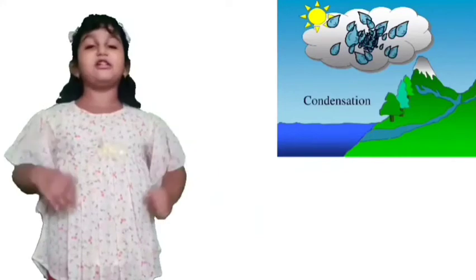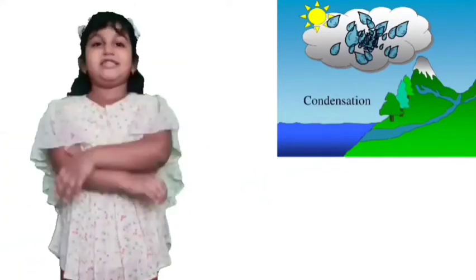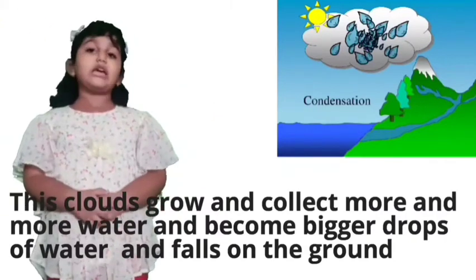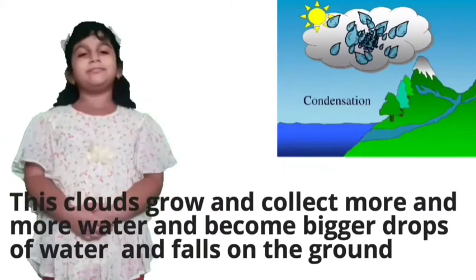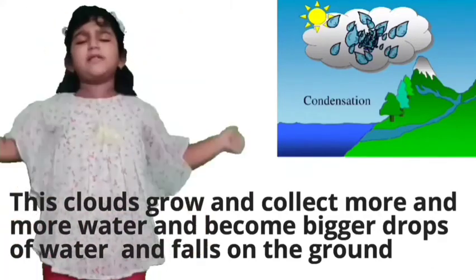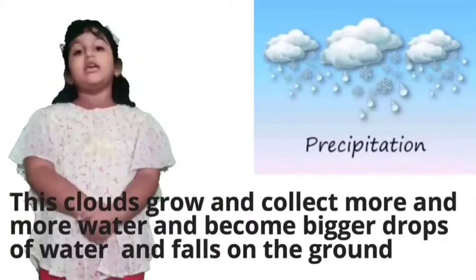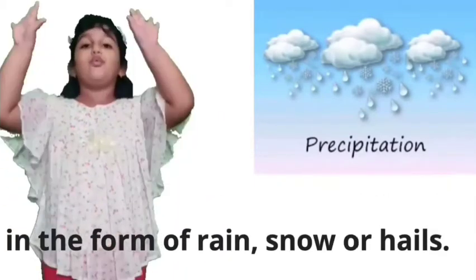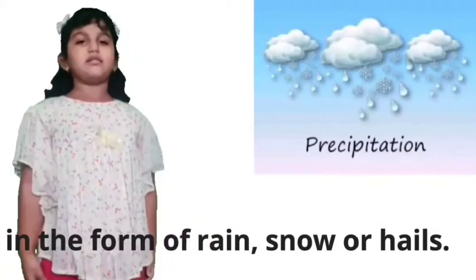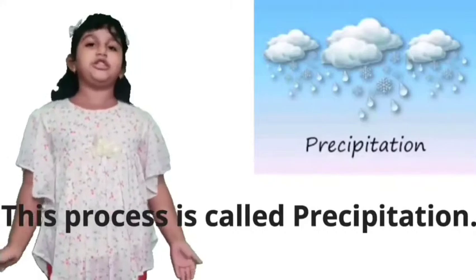The names are difficult but the processes are very easy to understand. So these clouds grow and collect more and more water and become bigger drops of water, and fall on the ground in the form of rain, snow or hail. And this process is called precipitation.